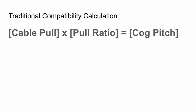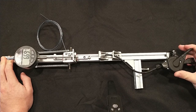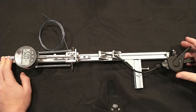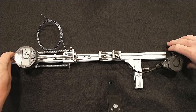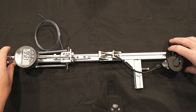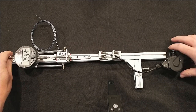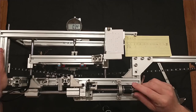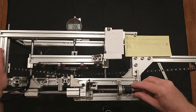Traditionally, people look to average cable pull, average pull ratio, and average cog pitch as a guide. Average cable pull is how much cable the shifter pulls per click, on average. We only need to consider the middle clicks — the clicks on the ends of the range are often much larger than those in the middle. The larger cable pull amounts at the ends allow the derailleur limit screws to control the position, not the shifter. Average pull ratio is how far the jockey wheel moves per millimeter of cable pull, on average. Average cog pitch is the distance between the center of adjacent cogs on the cassette, on average.